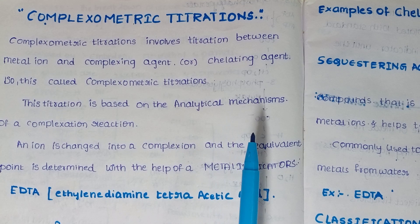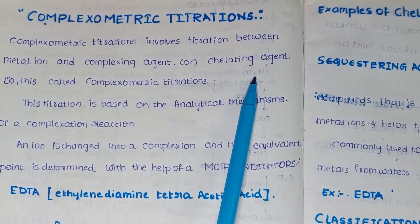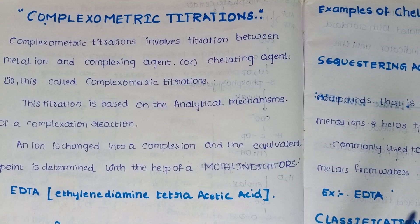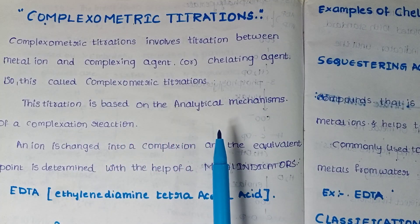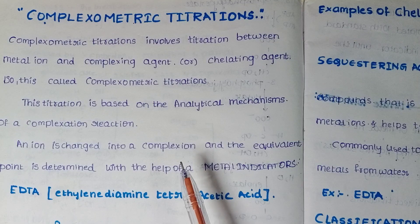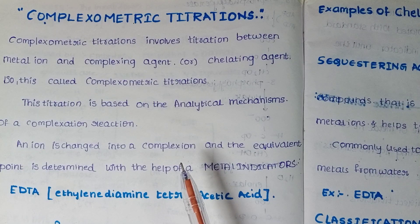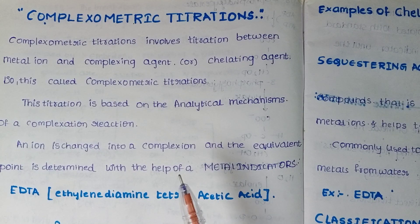We will discuss these three things: EDTA and metal ion with chelating agent, and titrations in the presence of a buffer as well as an indicator. What is a buffer? A buffer is nothing but resistance to pH. The titration is based on the analytical mechanism — the complexation reaction. Analytical mechanism means taking a conical flask, adding the analyte with the indicator and buffer, and titrating against the standard solution, which is EDTA in complexometric titrations.